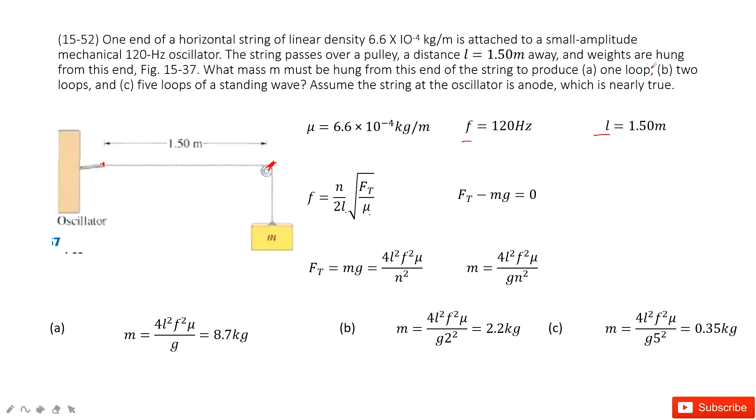Because we need to provide one loop, two loops, or five loops, so n is 1, 2, or 5. Now, F_T, how can we get F_T?